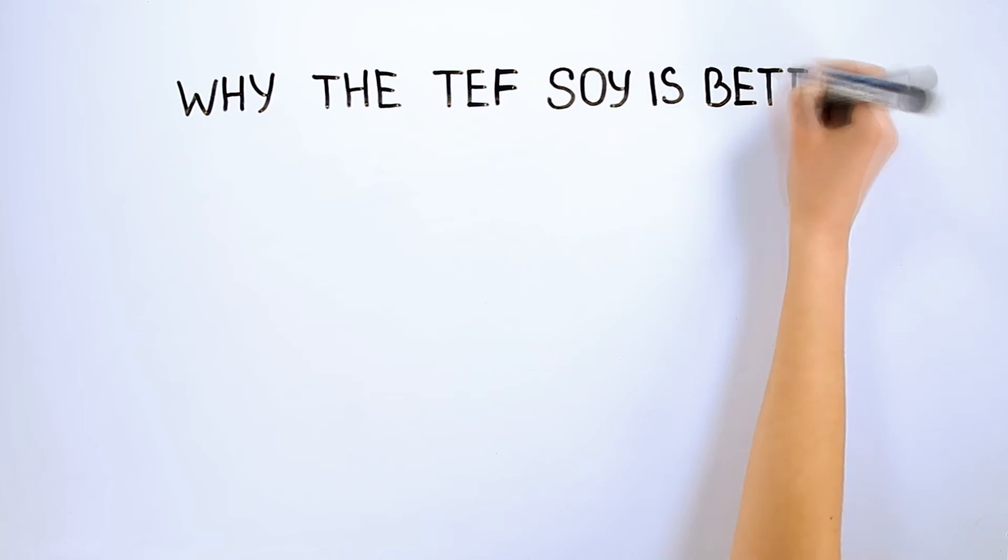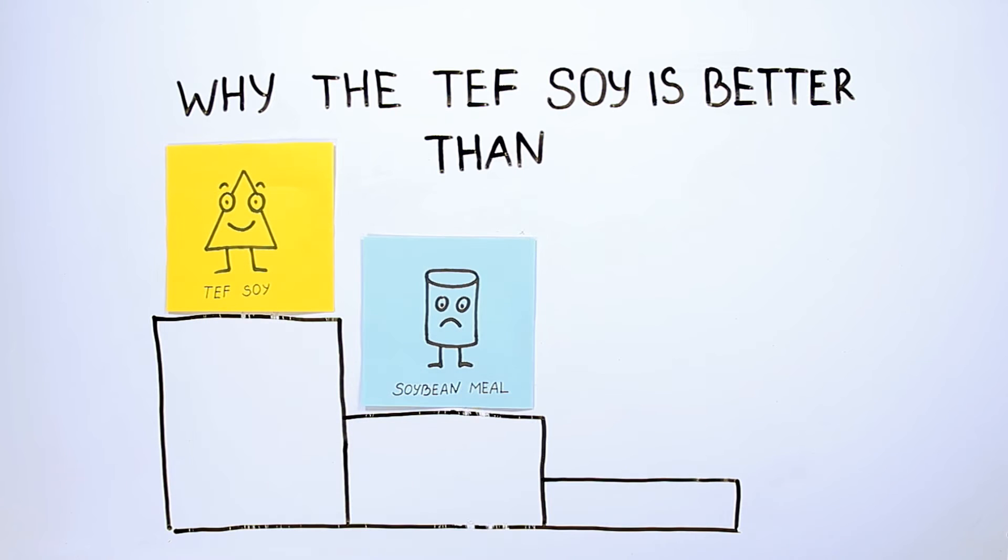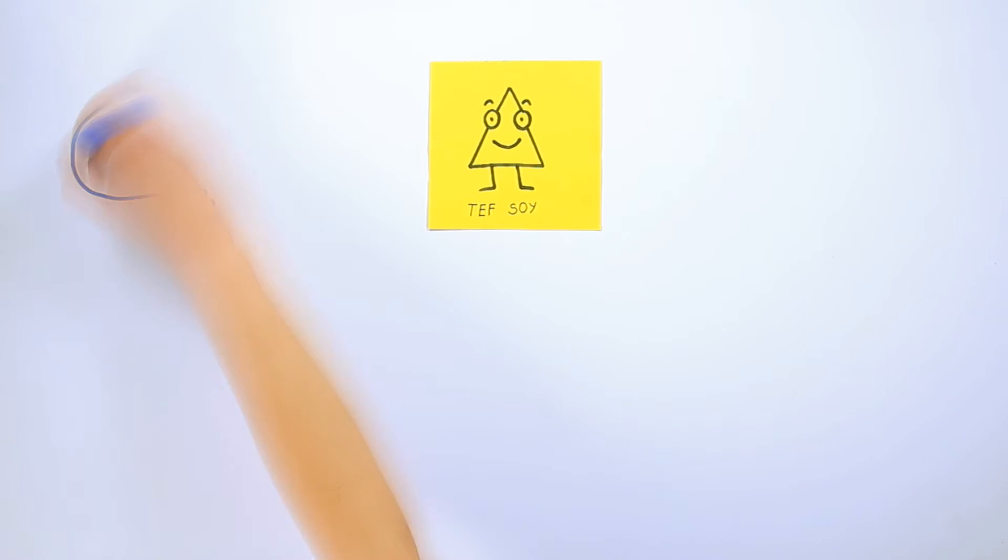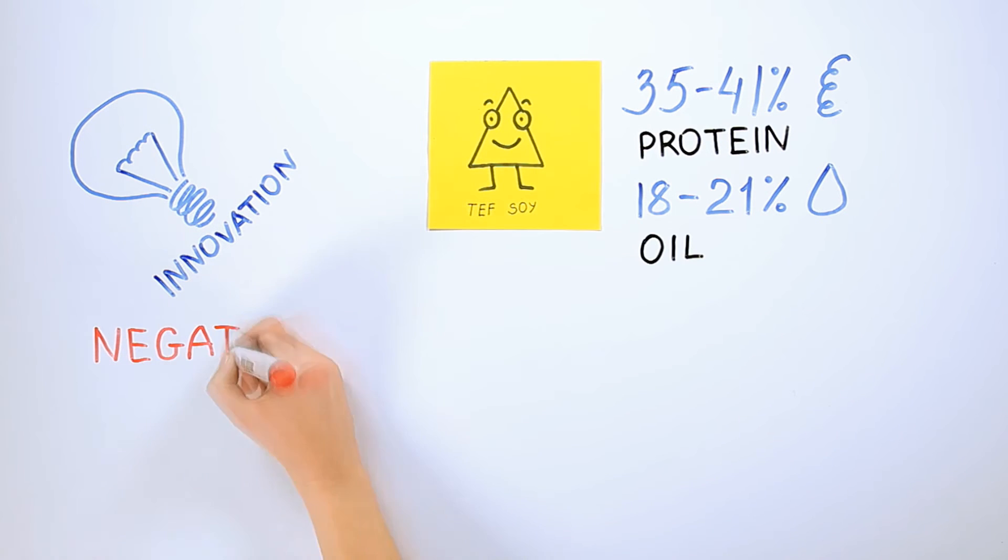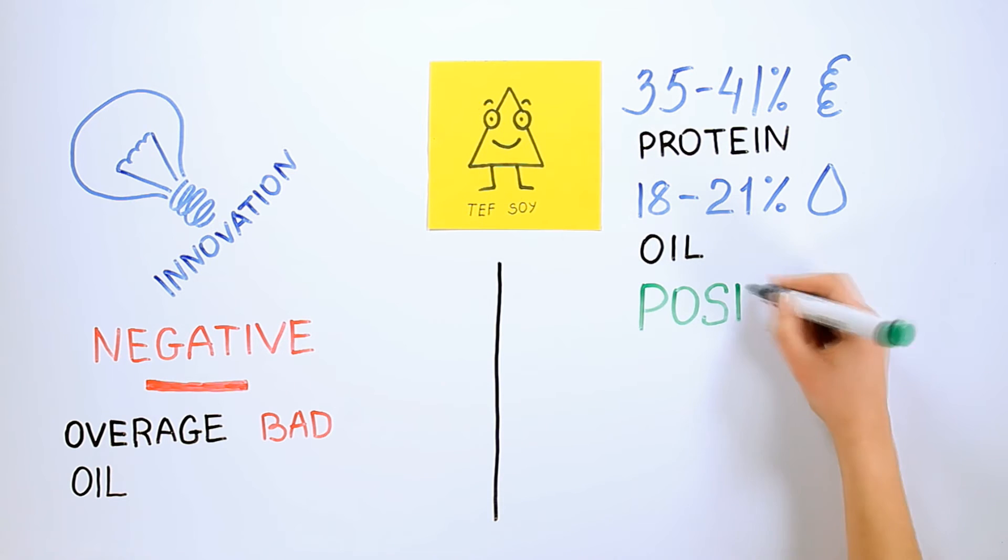What are the advantages of the TEF soy compared to meal and oil cake? The TEF soy data: 35 to 41% protein, 18 to 21% oil. Disadvantages: In some recipes, while balancing animal feed, oil surplus are present.